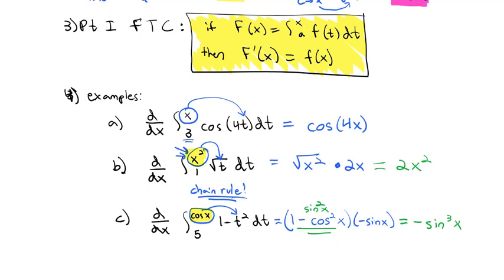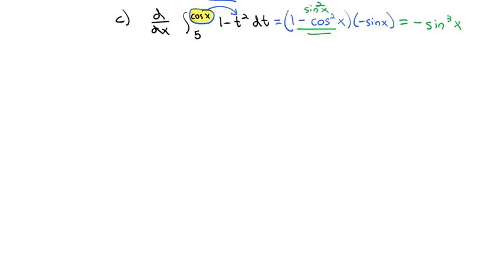So that's part one of the Fundamental Theorem of Calculus: the derivative of the integral is the inside function. The derivative and integral undo each other. Now let's look at part two of the Fundamental Theorem of Calculus.